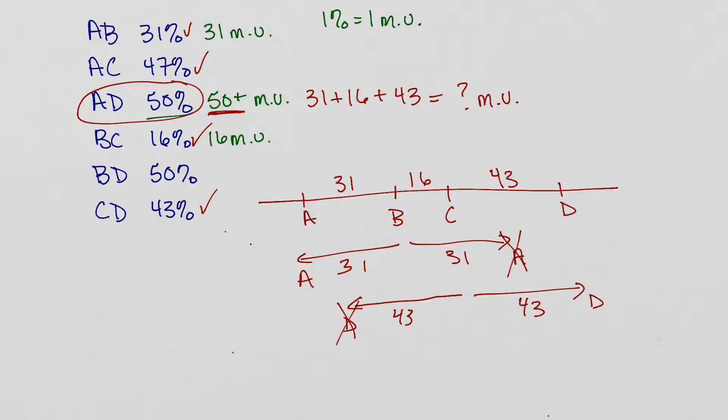If we add those up, we can see the exact distance. We can do the same thing for B and D. B and D, we can see that they would be, it's this distance here. So that's going to be 16 plus 43. That's going to give us the actual number of map units between those two. Again, it's over 50, which is what we would expect.